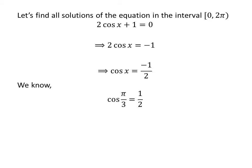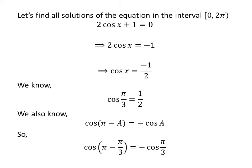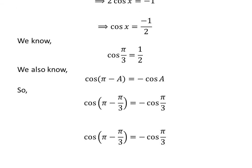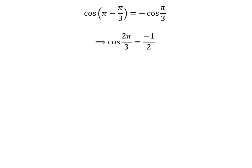We know the value of cosine of π/3 is one-half. We also know the famous trigonometry identity cosine of (π minus a) is equal to minus cosine of a. The proof of this identity is given in the video appearing in the upper right corner, and the link is also given in the description. Applying this identity: cosine of (π minus π/3) equals minus cosine of π/3. Since π minus π/3 equals 2π/3, we get cosine of 2π/3 is equal to minus one-half.